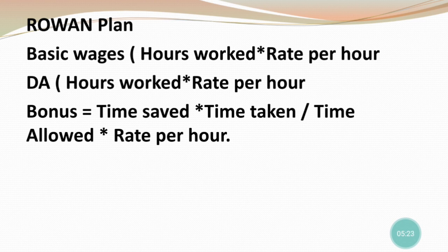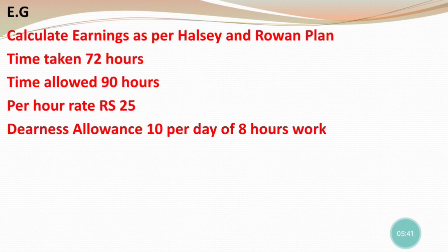Comparing Halsey and Rowan: basic wages remain the same and dearness allowance remains the same for both. Only the bonus calculation changes. In Halsey we calculated 50% of time saved × rate per hour, but in Rowan we do time saved × time taken ÷ time allowed × rate per hour. These are the two basic formulas in labour costing. Let us take an example to make the formula clear: calculate earnings as per the Halsey plan and Rowan plan.